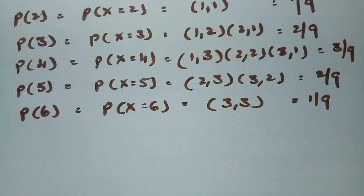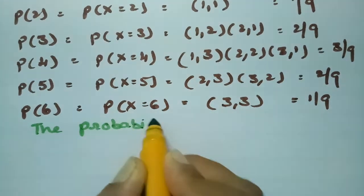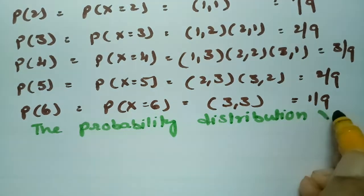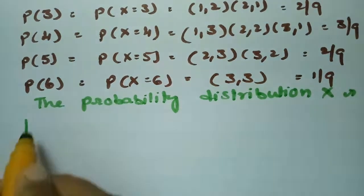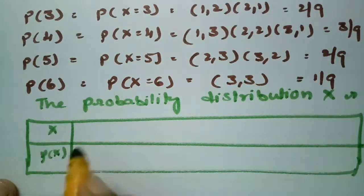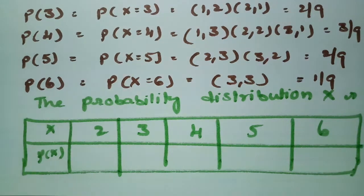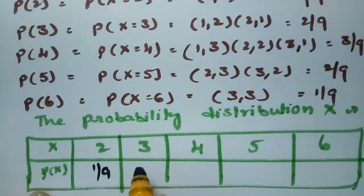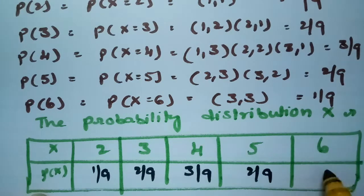The probability distribution table has X values and corresponding P(X) values. For X = 2, P(X) = 1/9. For X = 3, P(X) = 2/9. For X = 4, P(X) = 3/9. For X = 5, P(X) = 2/9. For X = 6, P(X) = 1/9. This is the complete probability distribution.